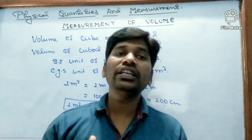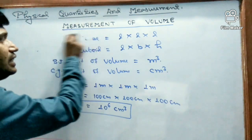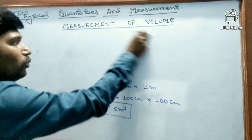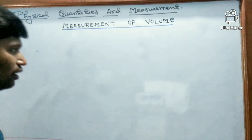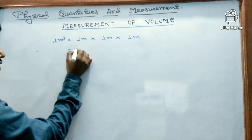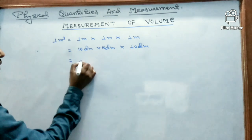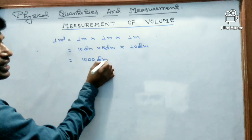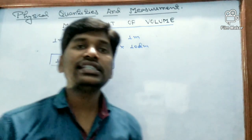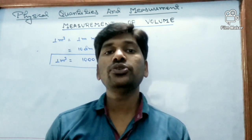Now the relation between meter cube and decimeter cube. One meter equals 10 decimeters, so one meter cube = 10 dm × 10 dm × 10 dm = 10³ = 1000 decimeter cube. So one meter cube equals 1000 decimeter cube. Next, one decimeter equals 10 centimeters, so one decimeter cube = 10 cm × 10 cm × 10 cm = 1000 centimeter cube.